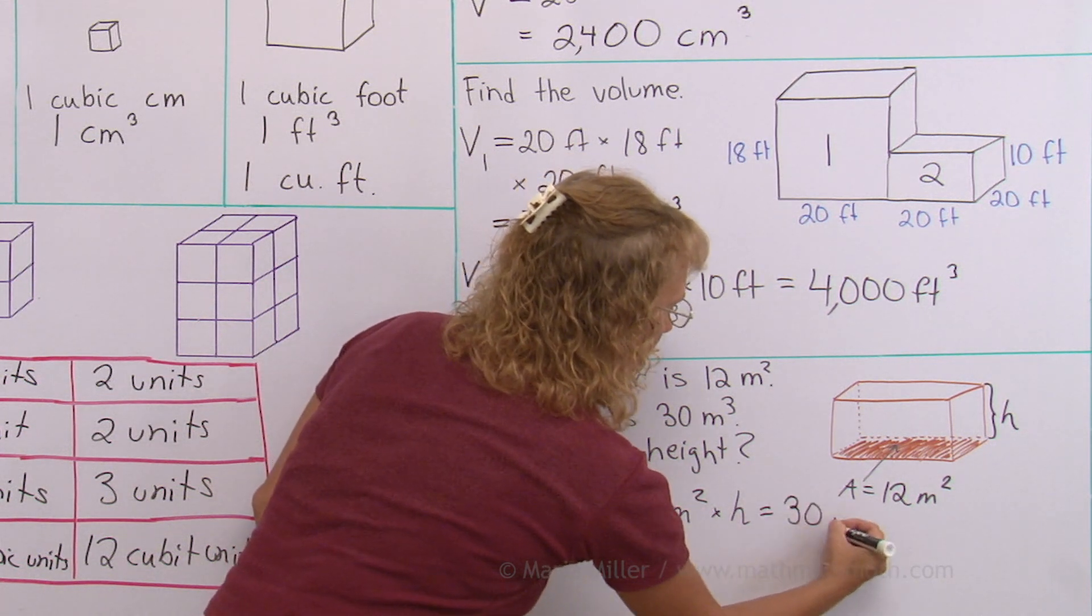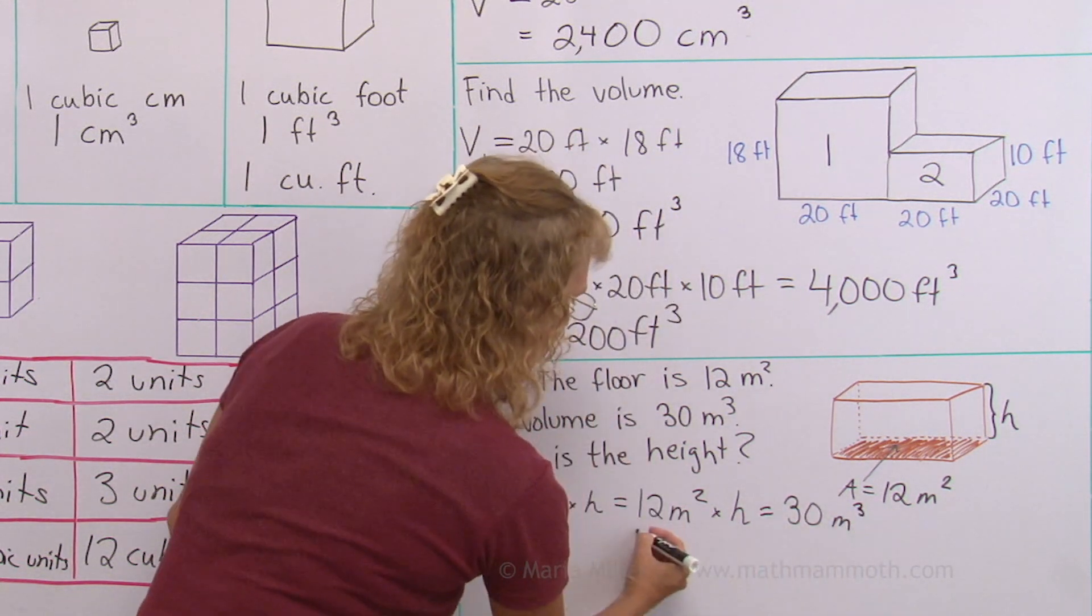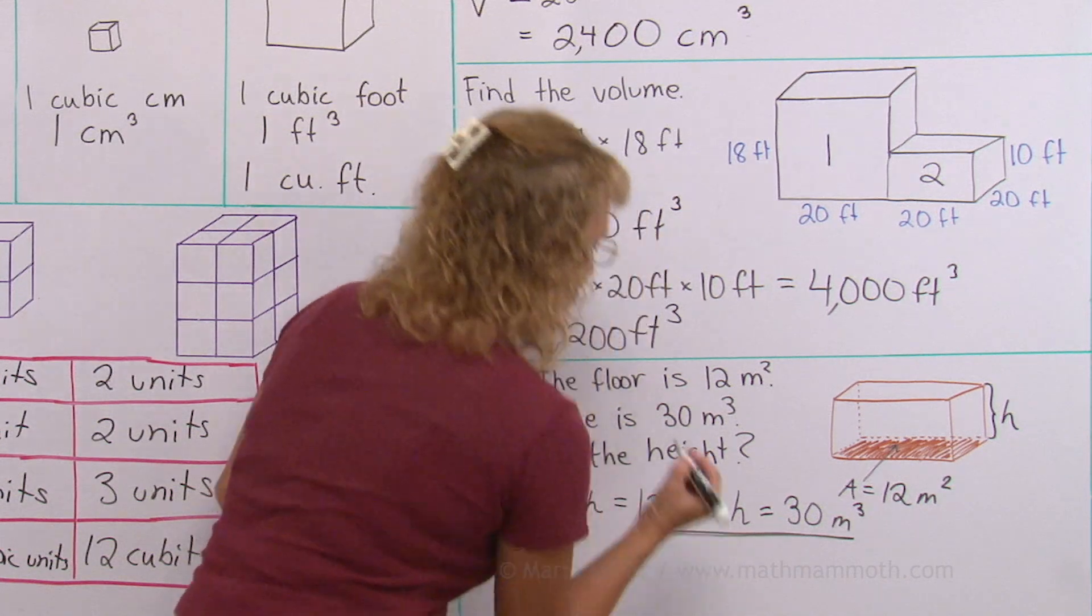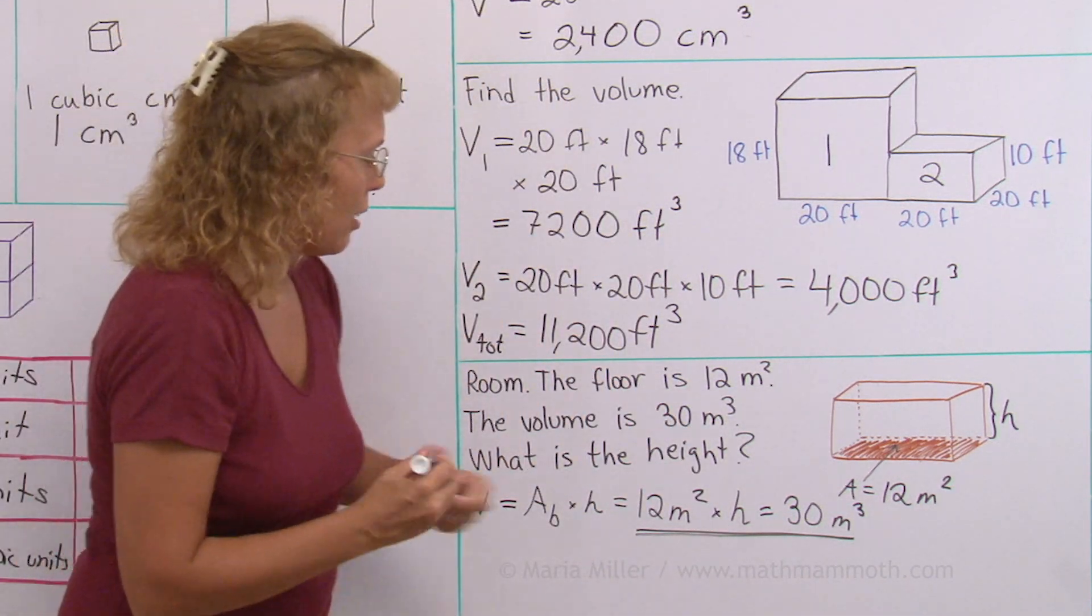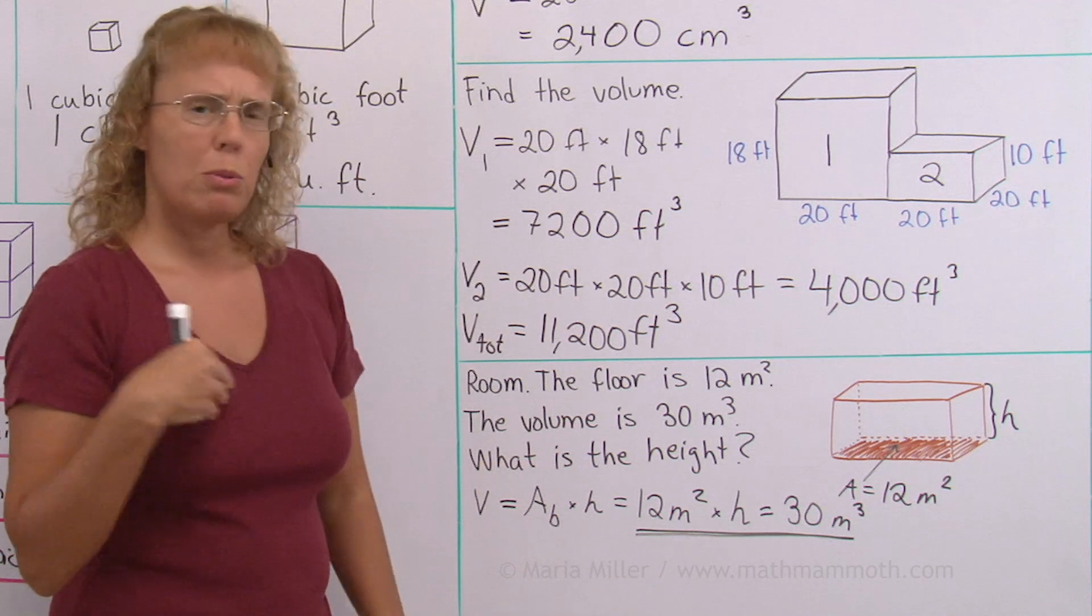which is 12 square meters times the height that we don't know. And then that is 30 cubic meters. So over here, we have a simple equation that we can solve with one unknown. What number would fit there?